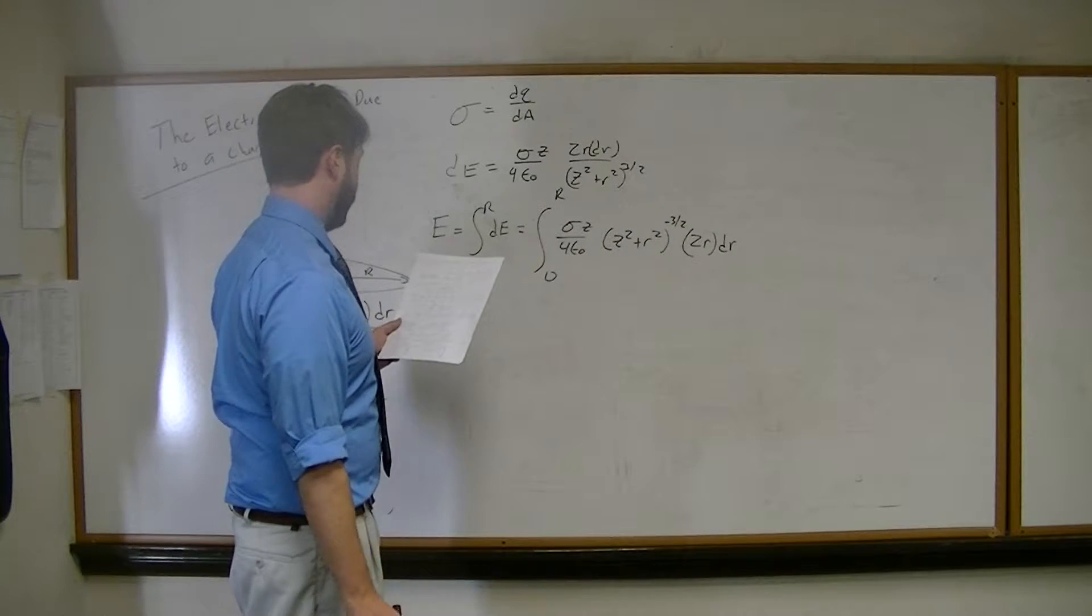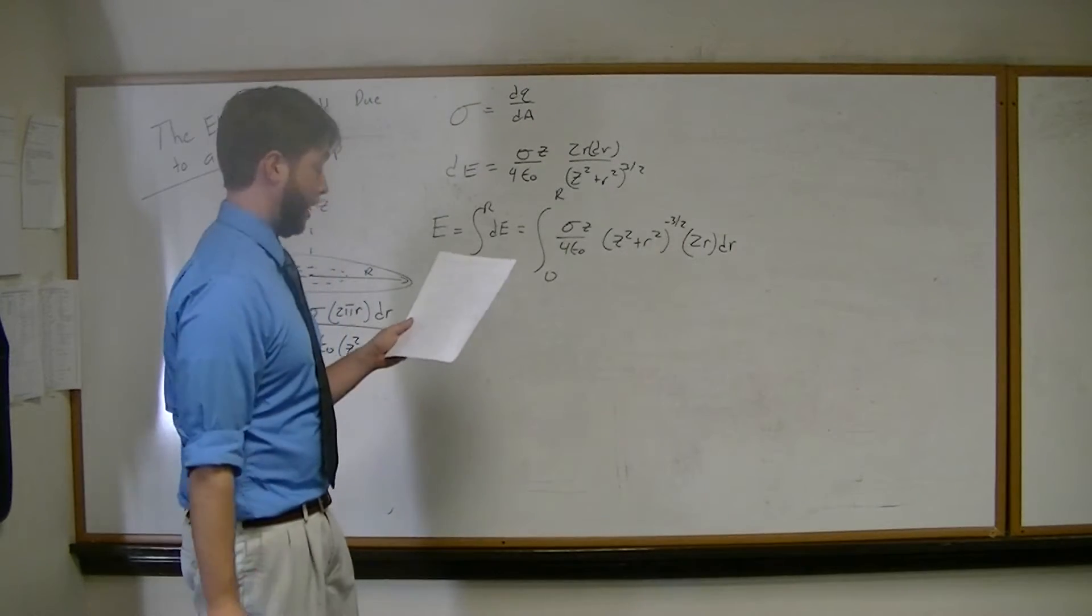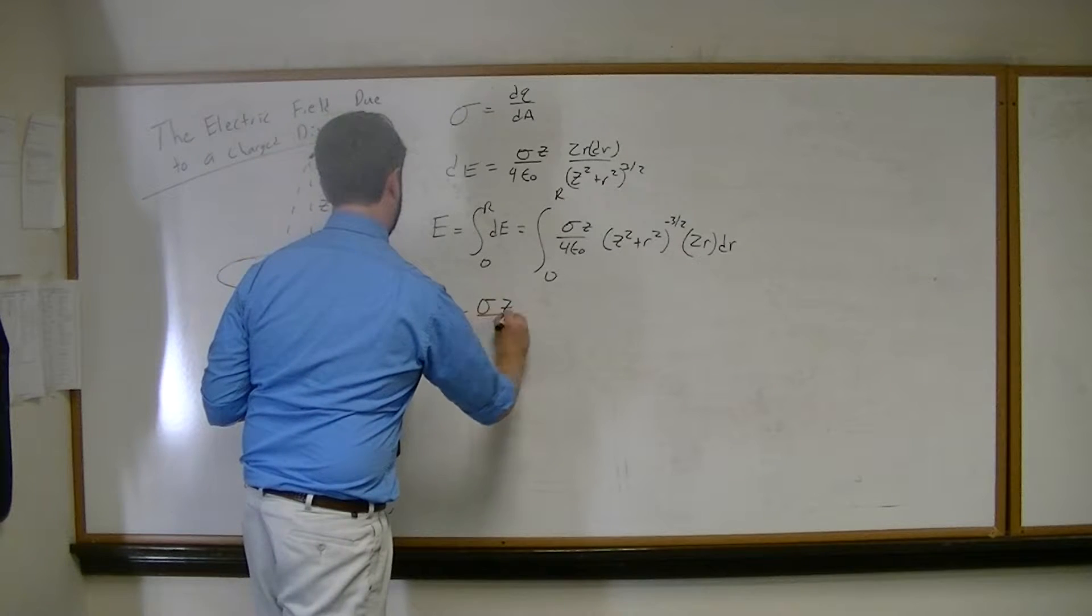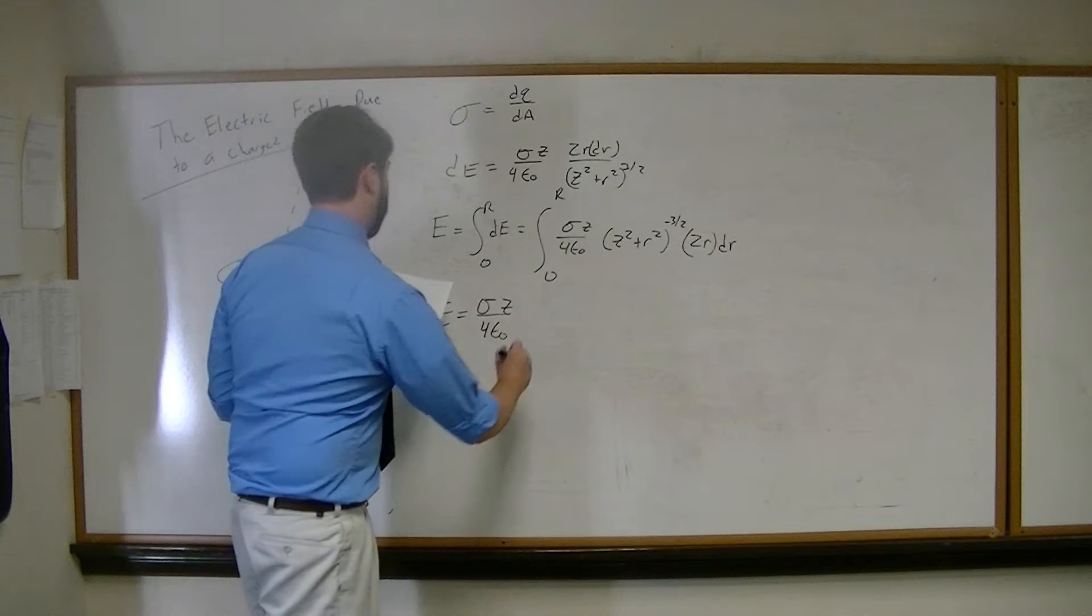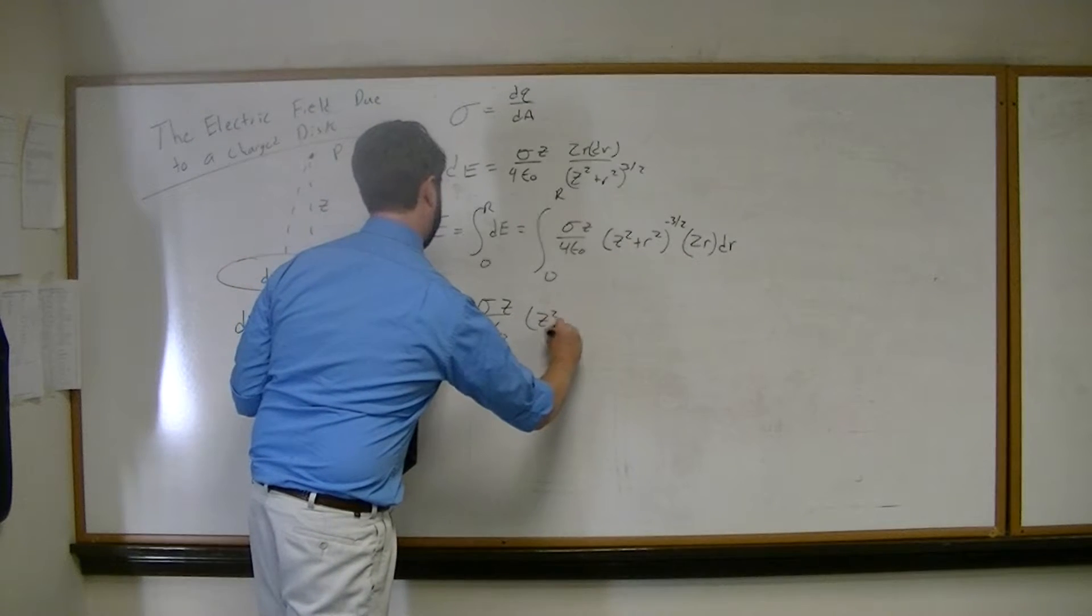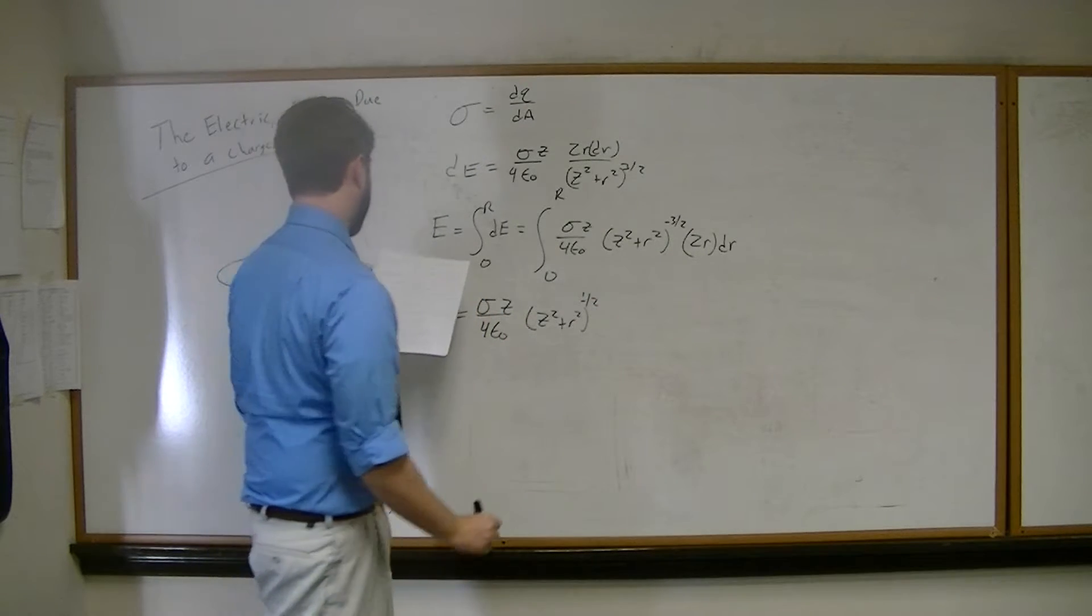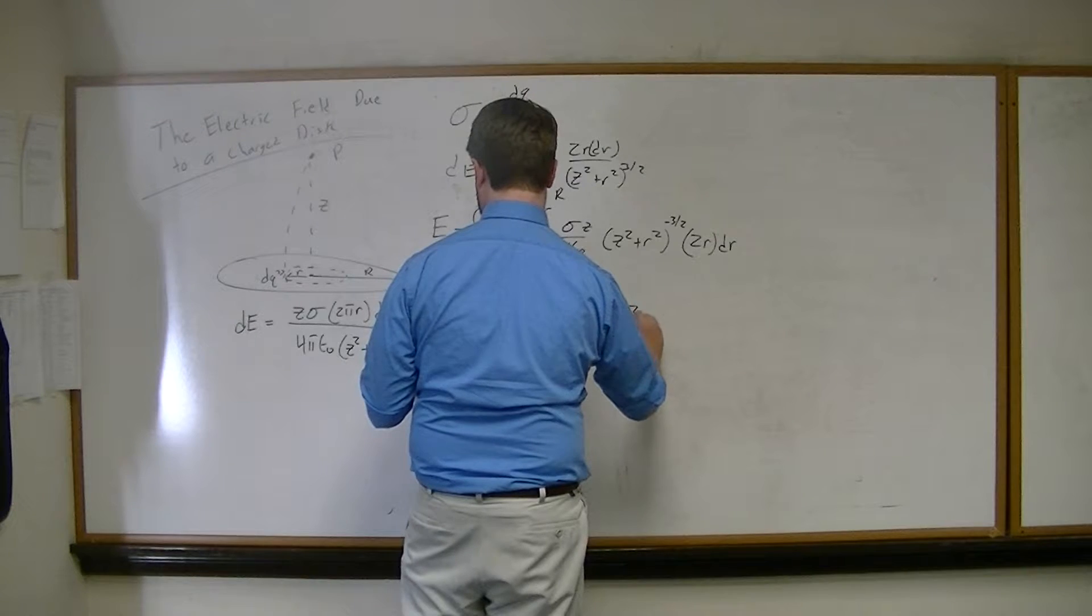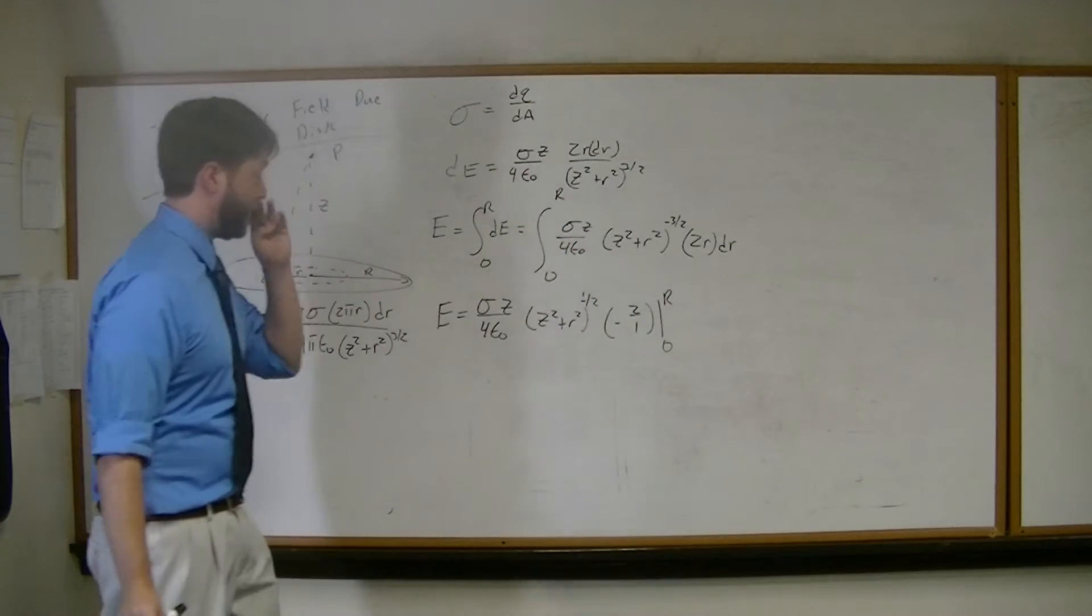A little bit of math later. You know what that means. That means you should probably do this on your own and just make sure you get the same thing. We get that the electric field is equal to sigma z over 4 epsilon naught. And now we have z squared plus r squared to the minus 1 half. And then we have negative 2 over 1 integral from 0 to r.